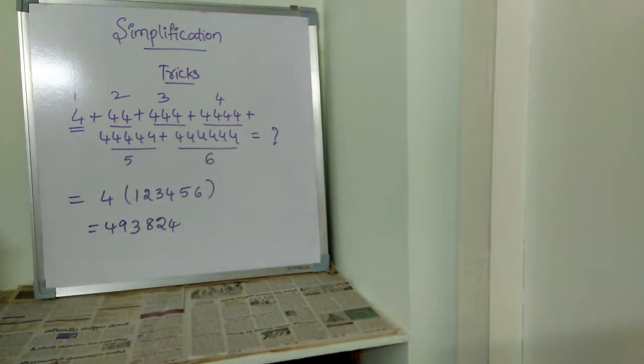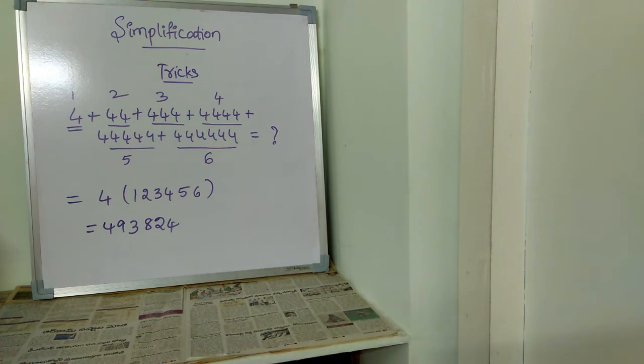This is the final answer. The sum of 4 plus 44 plus 444 plus 4444 plus 44444 plus 444444 is 493824. Using this trick we've solved the same problem with very less effort by saving a lot of time. This is one trick which you must know.